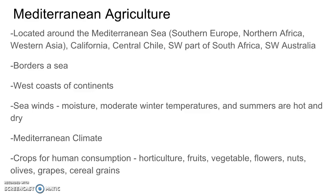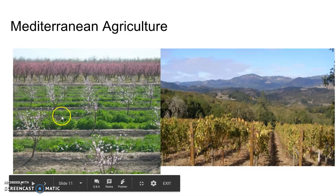Next, let's talk about Mediterranean farming. This is located around the Mediterranean Sea — Southern Europe, Northern Africa, Western Asia — and also in California, central Chile, southwestern South Africa, and southwest Australia. These areas border a sea on the west coast of continents, where sea winds bring in moisture, creating moderate winter temperatures and hot, dry summers. Crops are for human consumption: horticulture, fruits, vegetables, flowers, nuts, olives, grapes, and some cereal grains.